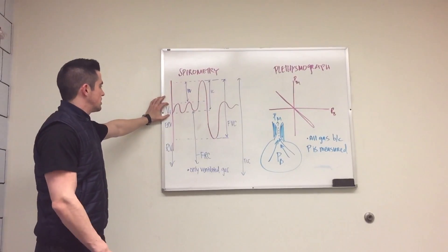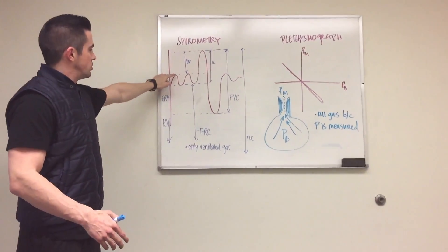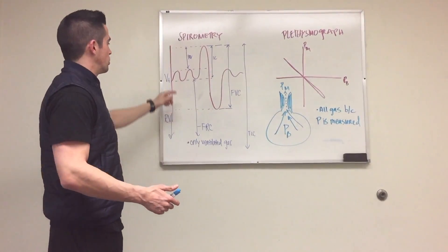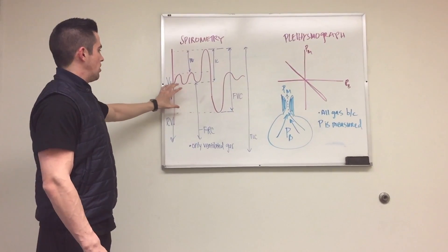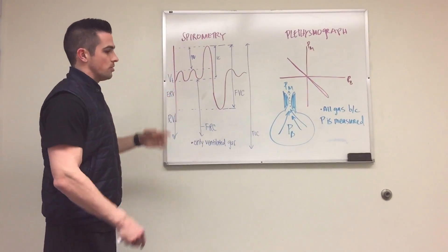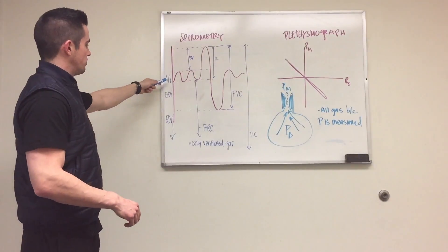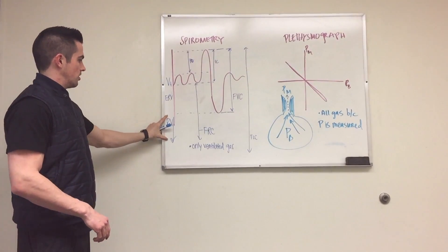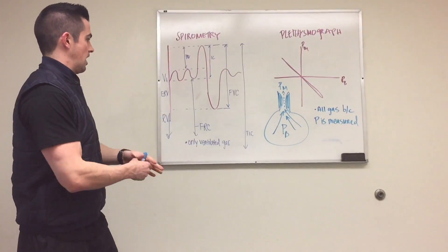Right here is our tidal volume. This is active inspiration and passive inward elastic recoil. This right here is our expiratory reserve volume. This is the amount you can expire beyond passive tidal volume. Down below here is our residual volume. This is the amount that resides in the lungs even if we expire everything out.